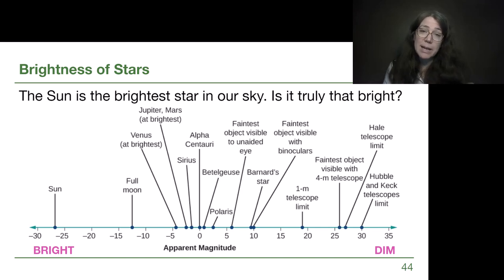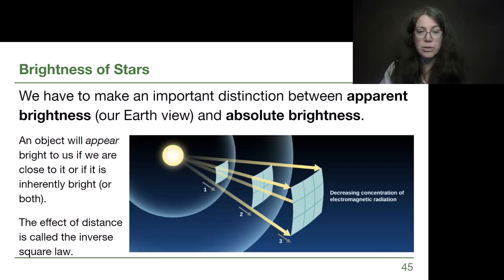Now, besides this magnitude scale working backwards, it also is this kind of inherently complex scale to work with mathematically for our introductory astronomy, because going from a one to a two is not doubling the brightness. It's more complicated than that. We're going to be seeing these magnitude numbers, but we're not going to work too closely with them when we can avoid it. So apparent magnitude is there to distinguish from a different type of brightness. So let's introduce that now.